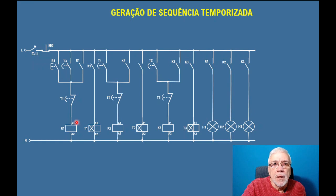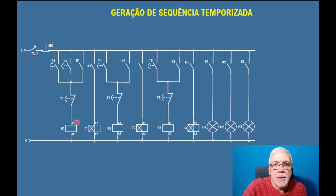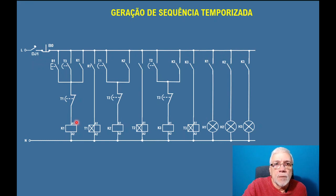Imagina, por exemplo, o sistema de uma esteira. Uma esteira sendo ligada, depois da esteira ligada ela vai parar e um outro dispositivo vai começar a operar a peça. Depois também vai parar e aí um terceiro dispositivo vai fazer algum outro tipo de trabalho. Então a imaginação é o limite. A ideia é que esses tempos entre uma operação e a outra operação, eles também são tempos programáveis. Você pode flexibilizar, não precisa ser o mesmo tempo, pode ser tempos diferentes.